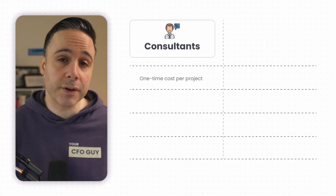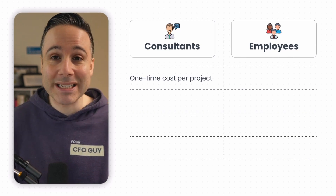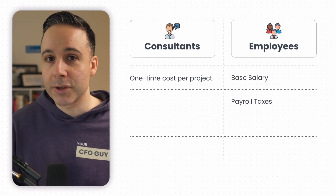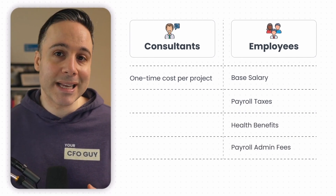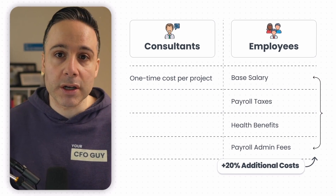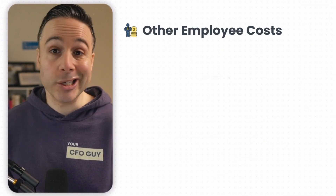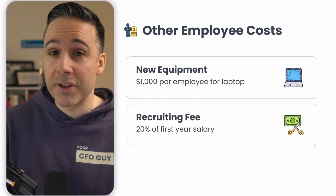Now if this person is a consultant, then you're set — this is the only calculation that you need. But if you're dealing with employees, there's more, because employees get all sorts of other costs associated with them, like payroll taxes, health benefits, or payroll admin fees. These oftentimes add an extra 20% in costs, let alone other costs that can be tied to your headcount spend — like a new laptop for every employee, or maybe a recruiting fee equal to 20% of their first year's salary. Once you have that in place, you can forecast the rest of your P&L.